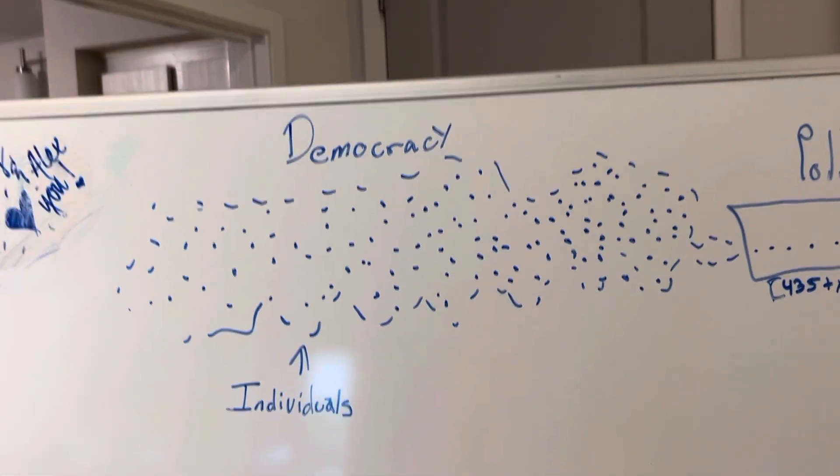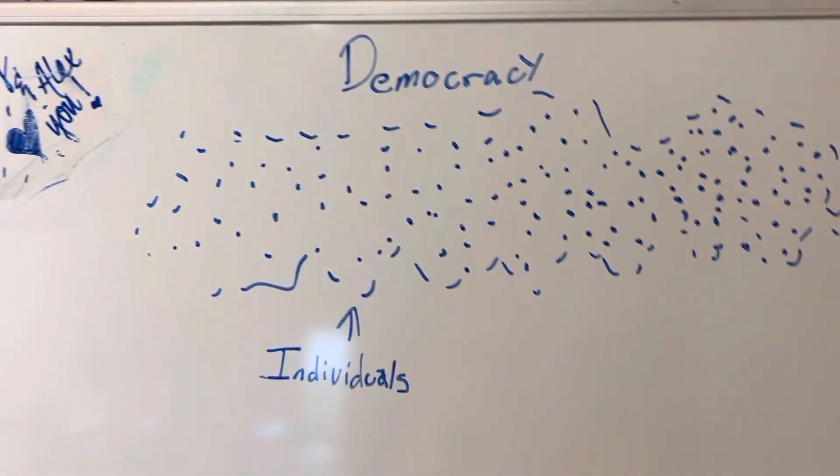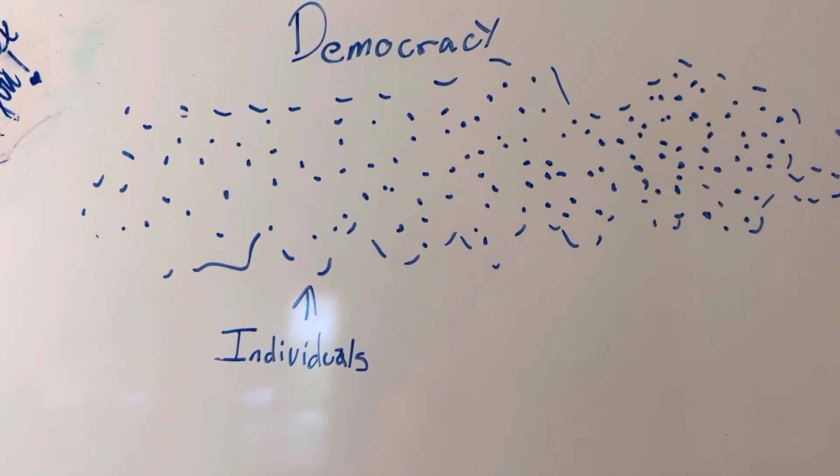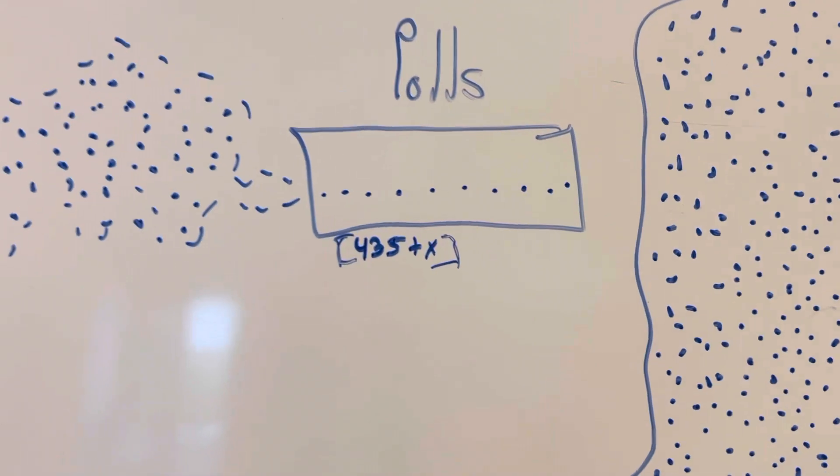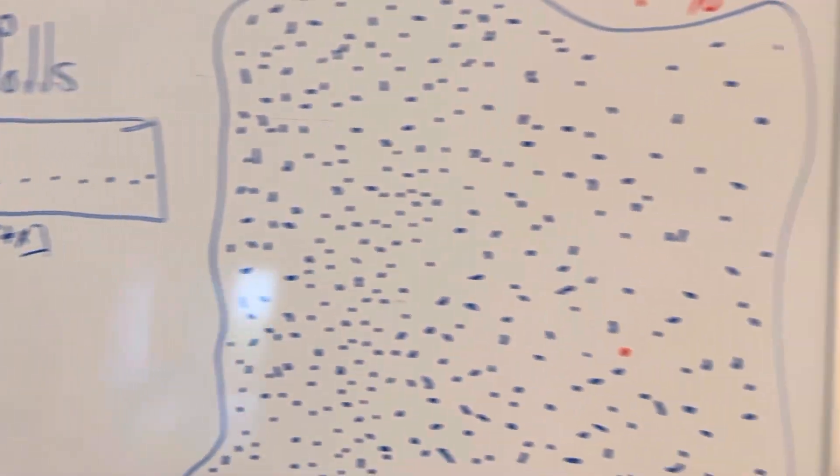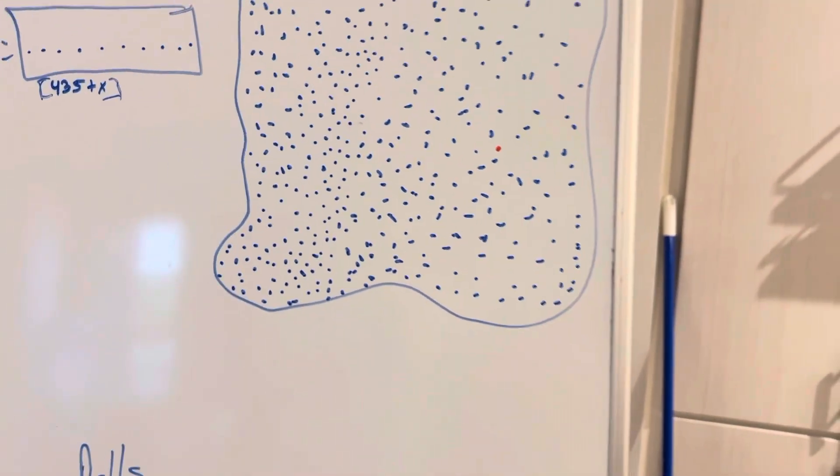The question is, could 100 million individuals visit multiple pairs each of 435 plus X pairs of people and nine out of every 10 times select the one who got more money than the other one? And as far as I know, that's a big fat no. I took that class.